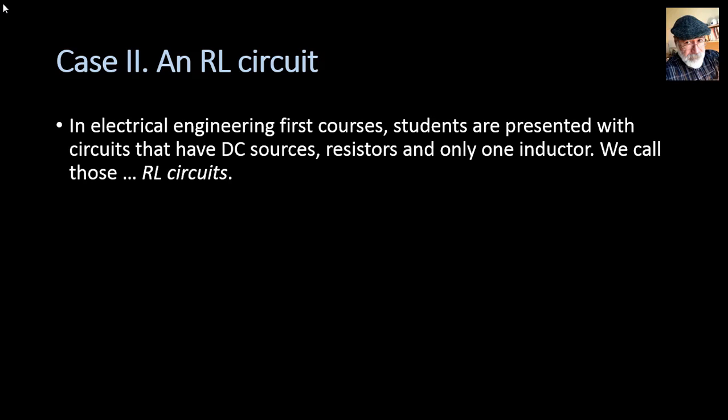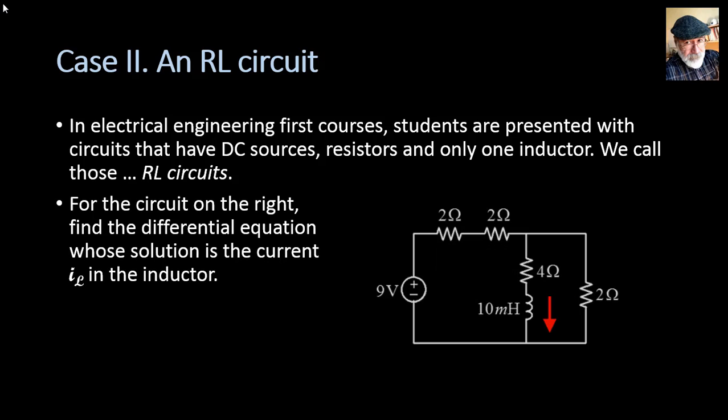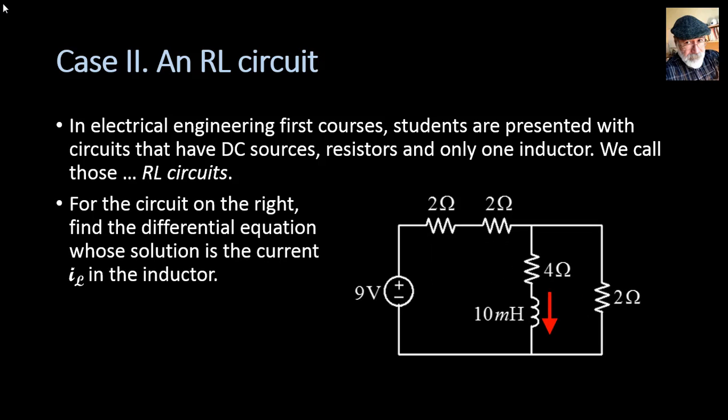Another case: an RL circuit. In electrical engineering first courses, students are presented with circuits that have DC sources, resistors, and only one inductor. We call those RL circuits. Here we have one source, four resistors, and one inductor. The question is: find the differential equation whose solution is the current in the inductor, IL.